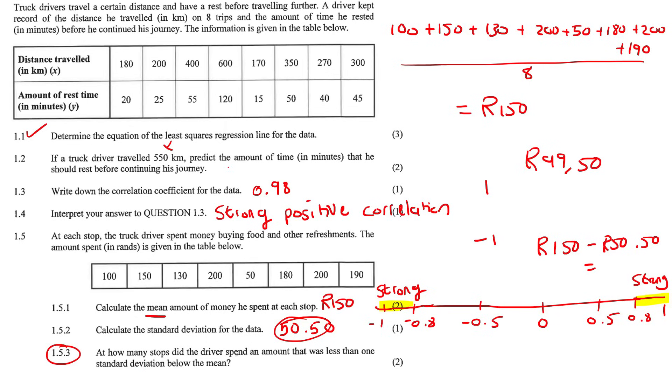So they want to know, at how many stops did the driver spend an amount that was less than one standard deviation below the mean? In how many stops did the driver spend even less than that? That would be only once. So one.